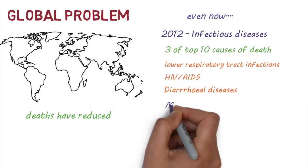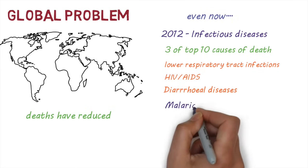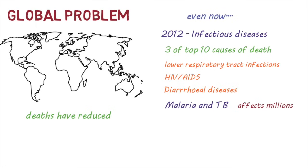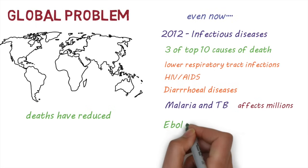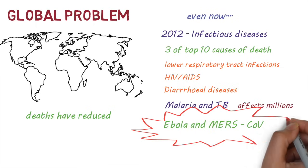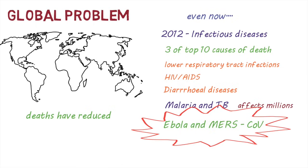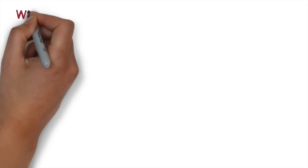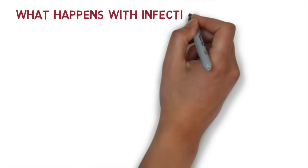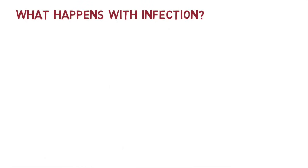In addition to this, malaria and tuberculosis continue to affect millions of people. New diseases like Ebola and MERS-CoV have sprung up, causing deadly outbreaks and killing thousands of people. Let's have a look at what happens when a person gets infected and talk about some terms used to describe infectious diseases.